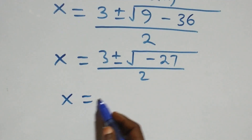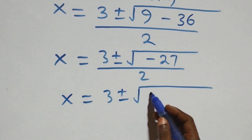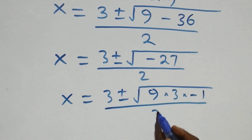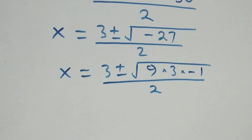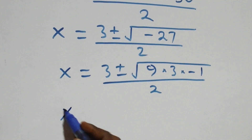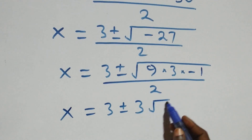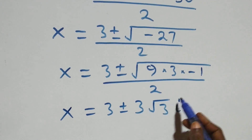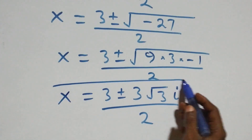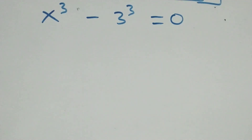So x equals 3 plus or minus the square root of minus 27. We can write root of minus 27 as root of 9 times 3 times minus 1, all over 2. Separating the roots: root 9 is 3, and root of minus 1 is i. So x equals 3 plus or minus 3i root 3, all over 2. This gives two complex solutions from the first case.